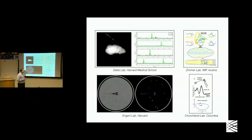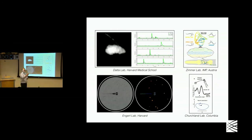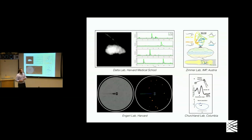One more example from neuroscience: this is from Mark Churchland's lab at Columbia, where they study primates doing motor control tasks. These primates receive a visual cue and then have to reach their arm toward a dot on a screen. While the monkey performs these tasks, they simultaneously record from hundreds of neurons in motor cortex, asking questions about the dynamics of neural activity and relating that to observed behavior — quantified in terms of the monkey's hand position, velocity, and acceleration.